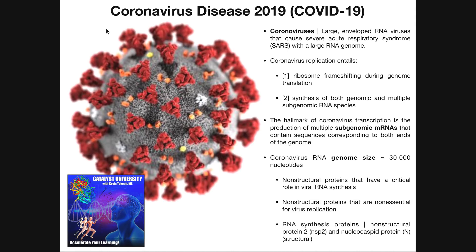Welcome back to Catalyst University. My name is Kevin Tokoff. In this video, we're going to be discussing the coronavirus of 2019, more specifically COVID-19. We'll see how, once this virus gets inside particular cells of the host, it dumps its RNA into the host cell cytoplasm, and then what that RNA does to assist in the replication cycle of the virus.